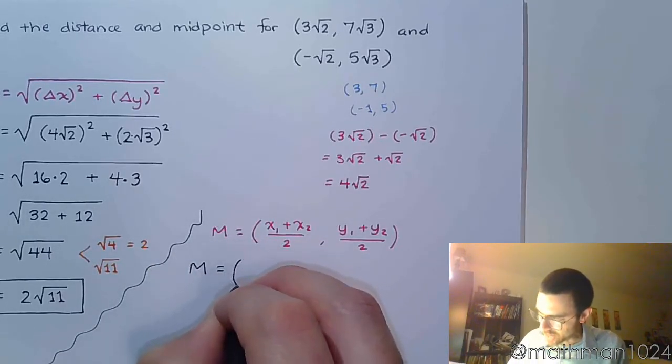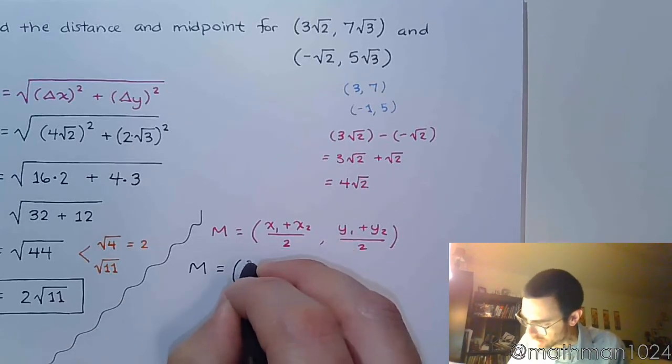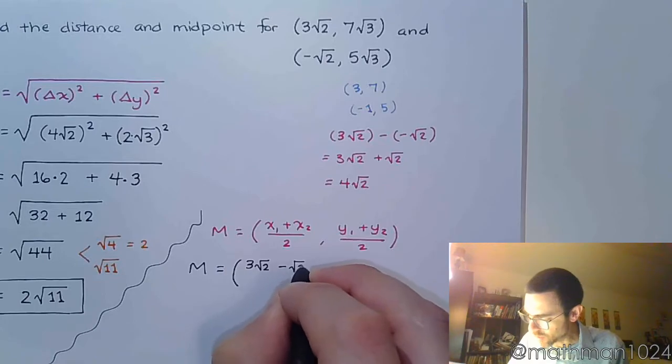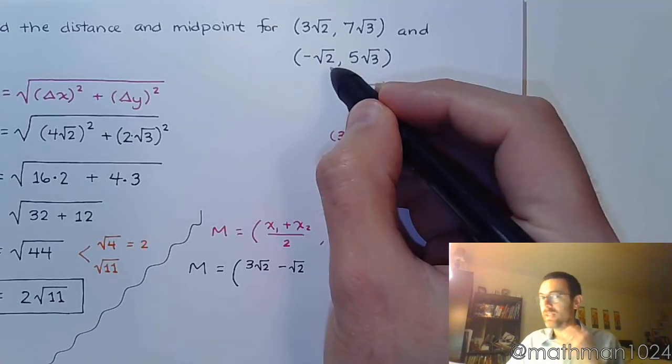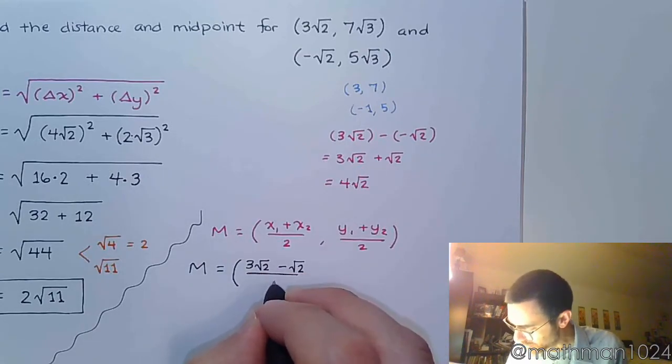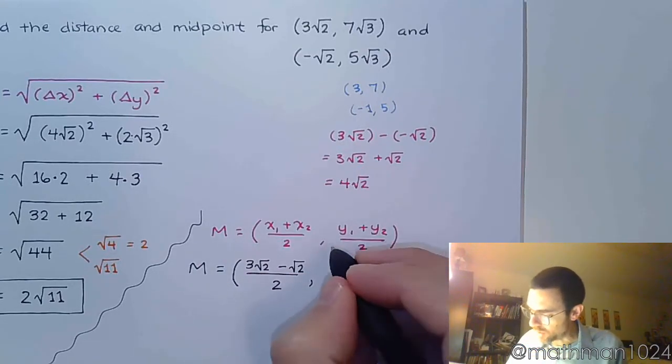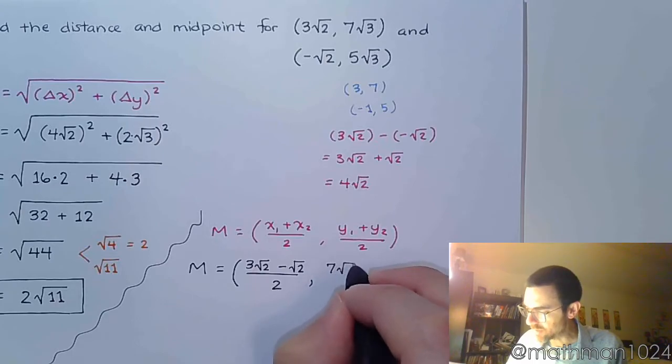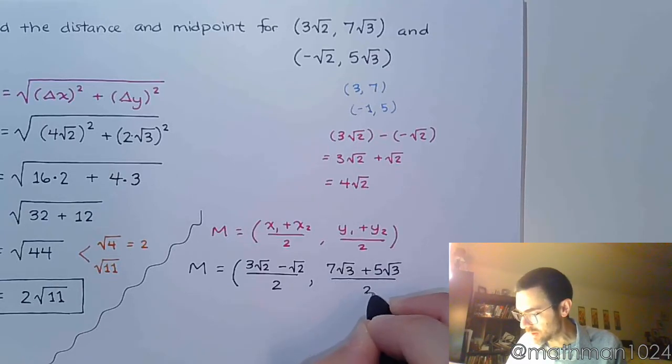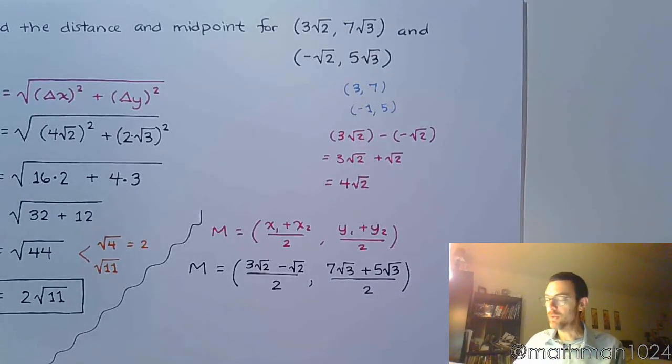All right, so let's see. If I take the average of the x's, so I'm going to take 3√2 minus the √2, because I'm just taking these guys exactly as I see them to combine them, divide by 2, and then for the y's, I have 7√3 plus 5√3 all divided by 2.